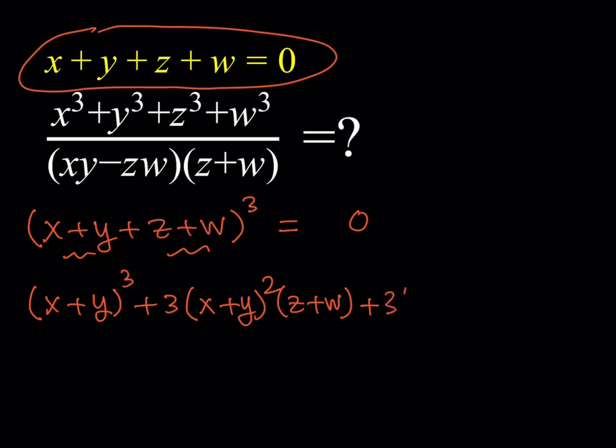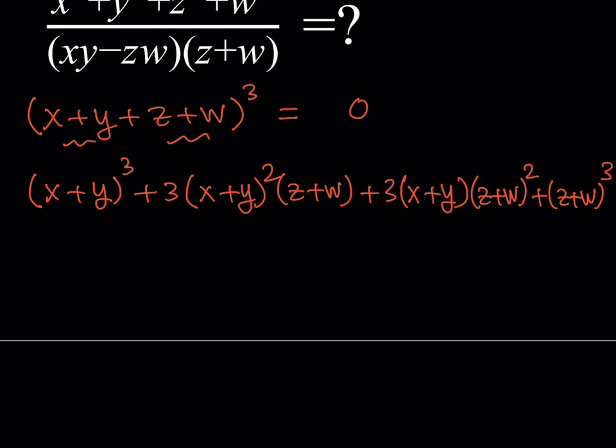So then we're going to get 3 times (x + y). That is going to be first power, and then you see the symmetry here. We have the 3, 3, and then finally, we're going to end with the cube of (z + w), which is the second term. So this sum is also equal to 0. Now, you can expand all of this and just come up with a crazy expression. That's not what we want. We want something more organized.